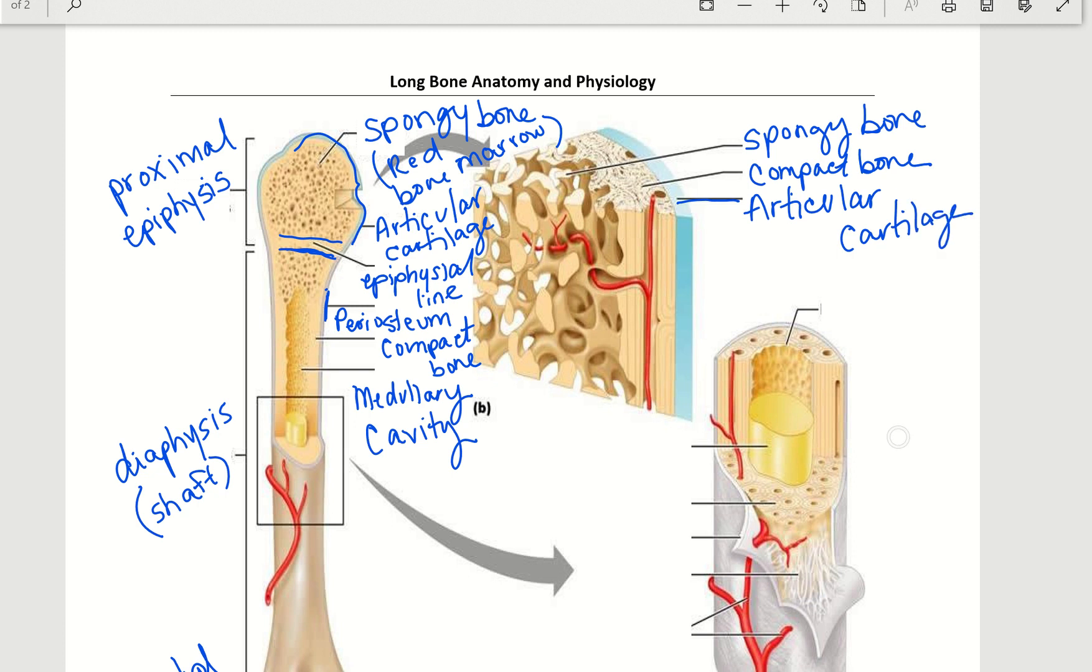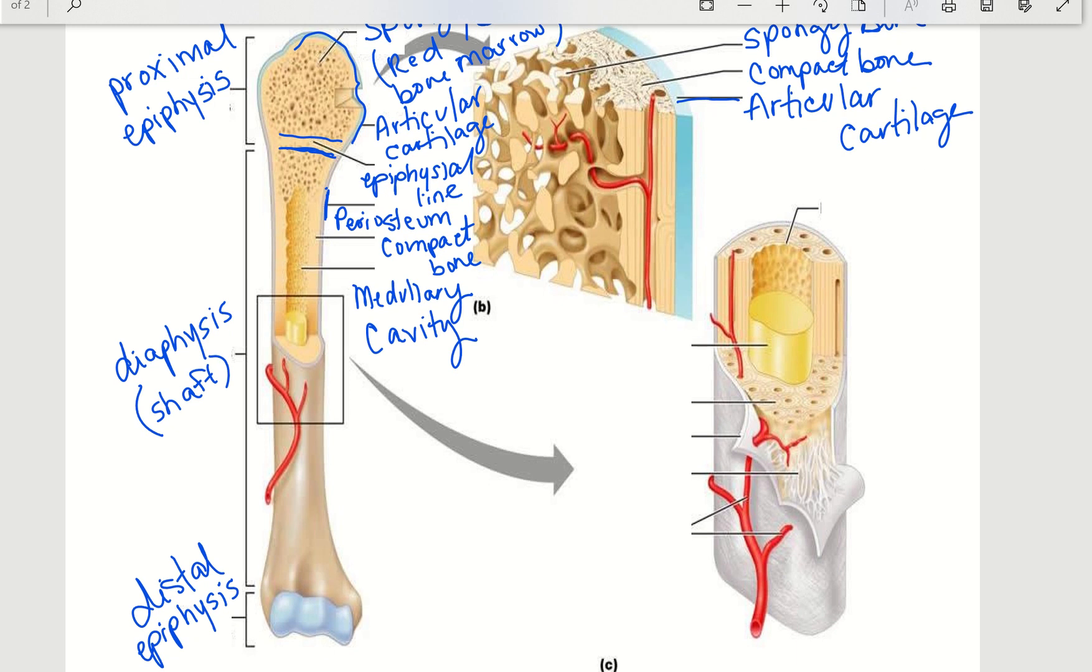And just one more to go. Almost done, guys. Here, you can see this lining, just like we had the periosteum on the outside. This section here is our periosteum, so peri meaning surrounding, osteum meaning bone. We also have a layer within the bone that's kind of like the lining of the medullary cavity. This is the endosteum. Endo means within.